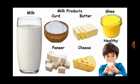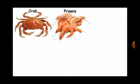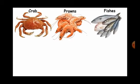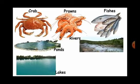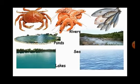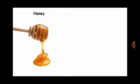Have milk and milk products every day to keep us healthy. We get crab, prawns, and variety of fishes from water bodies like ponds, lakes, rivers, and sea. We get honey from honey bees.